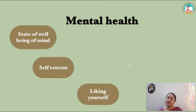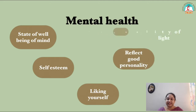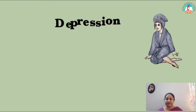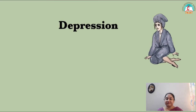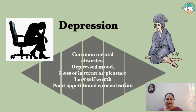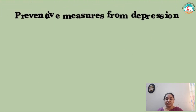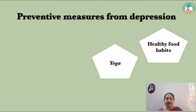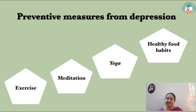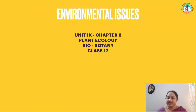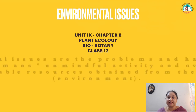Mental health is a state of well-being of the mind. It gives us self-esteem, reflects good personality, and helps improve quality of life. Depression is a common mental disorder characterized by depressed mood, loss of interest or pleasure, low self-worth, poor appetite, and poor concentration. Preventive measures include exercise and meditation. We will now quickly recall chapter 8 in botany about environmental issues.